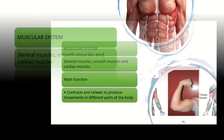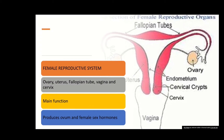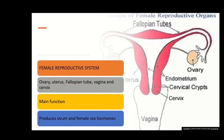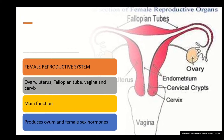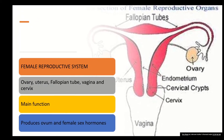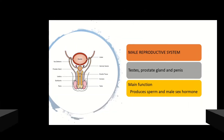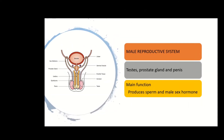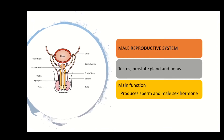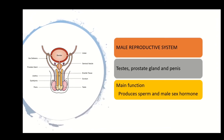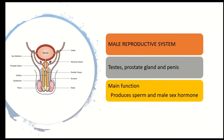The female reproductive system consists of the ovary, uterus, fallopian tube, vagina, and cervix. The main function is to produce ova and female sex hormones. The male reproductive system consists of the testes, prostate gland, and penis. The main function is to produce sperm and male sex hormones.